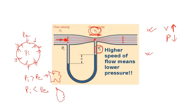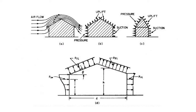Now let's see what happens during wind load. Consider this structure. For this particular wall, wind is flowing from left to right — so simply the pressure will act from left to right on the windward wall. There is no confusion here.